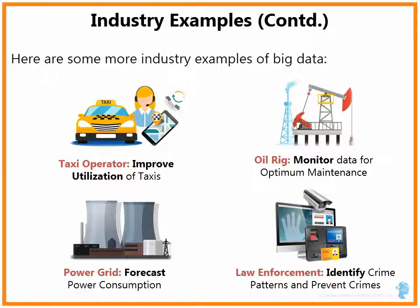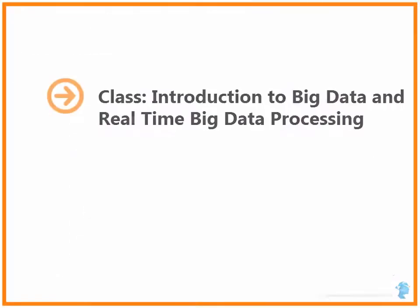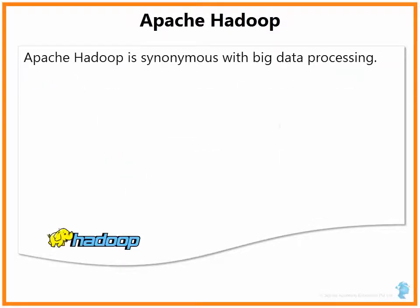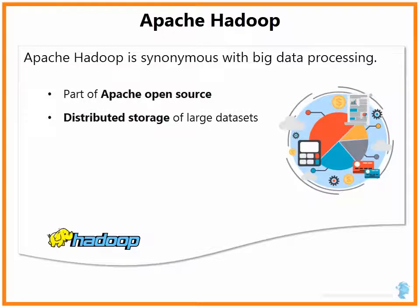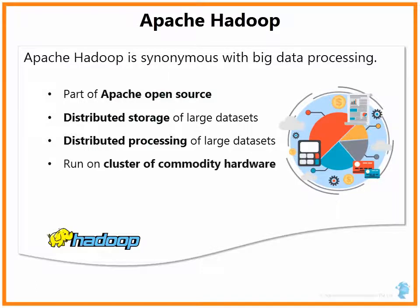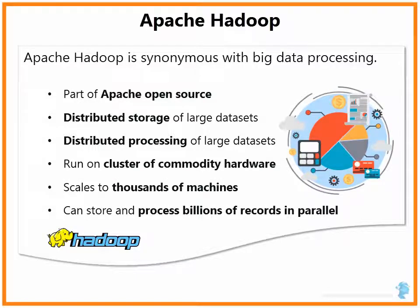Next, let us look at Apache Hadoop, one of the popular tools for Big Data processing. Apache Hadoop is synonymous with Big Data processing. It is part of the Apache open source tools. It provides a framework for distributed storage and distributed processing of large data sets. It is run on a cluster of commodity hardware and scales to thousands of machines, storing and processing billions of records in parallel.